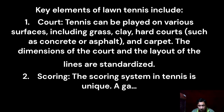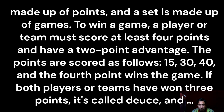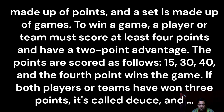The scoring system in tennis is very unique. A game is made up of points and a set is made up of games. To win a game, a player or team must score at least four points with at least a two-point advantage. Points are scored as follows: 15, 30, 40, and the fourth point is game.